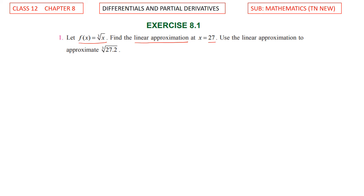Given a function, we can find the value. If you apply x equal to 27, cube root of 27 is 3. Since 27 on the cube root is 3, we first find the linear approximation, then apply it to approximate the cube root of 27.2.